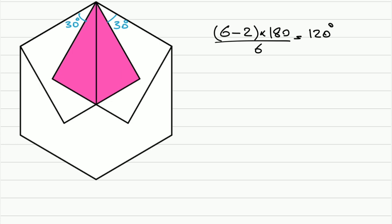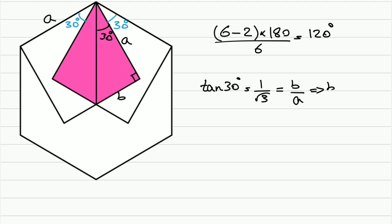Now if we draw this segment, because of the symmetry this angle will be 30 degrees, the other one is also 30 degrees, and this is a right angle. So let's call the side length a — this side is also a. The tangent of the 30-degree angle is 1 over square root 3. Let's call this length b; that equals b over a, which means b is a over square root 3.